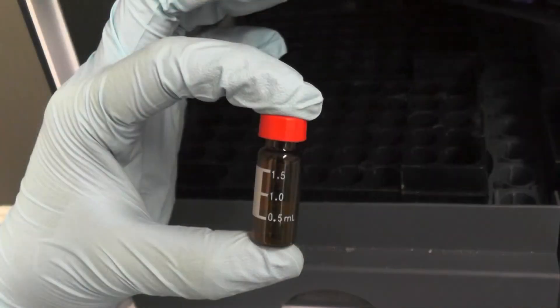Note that the maximum capacity of HPLC vials is 2 ml. Therefore, it is best to add the volume between 0.5 and 1.5 ml to ensure efficient sampling.